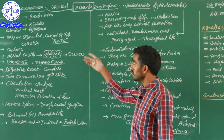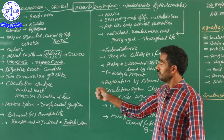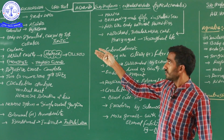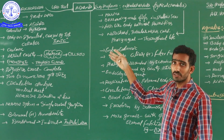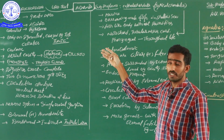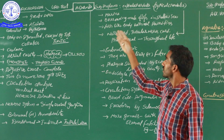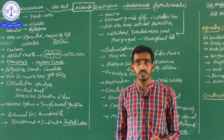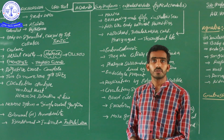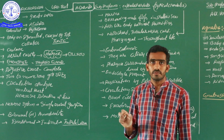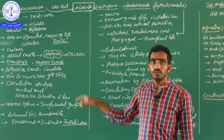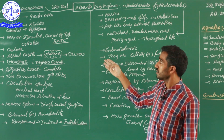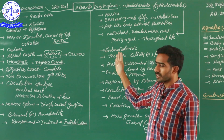Good morning, dear students. In this video session, I would like to explain about some of the phylum Chordata subphylums. The three subphylums of Chordata are Urochordata, Cephalochordata, and Vertebrata. In the last class, we already discussed the Chordata classification. Now in this session, we will cover the general characteristics of these three subphylums.